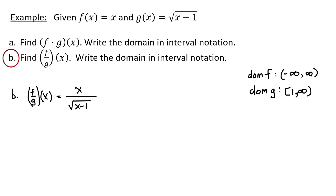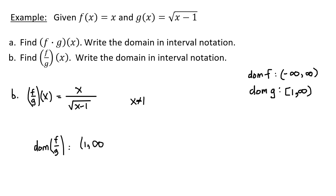In part B, f divided by g of x equals x divided by the square root of x minus 1. We can't divide by zero and we can't have a non-real number under the square root, so x equals 1 must be excluded from the denominator. Therefore the domain of f divided by g is 1 exclusive, not including 1, all the way up to positive infinity.